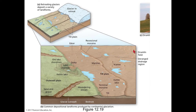So we have drumlins, eskers, kames, kettle lakes, and deltas. The outwash plain is made of material washed out from the till plain.